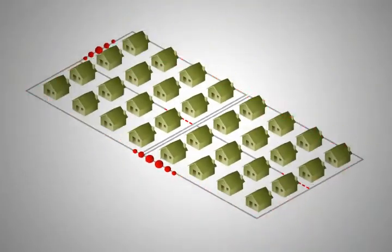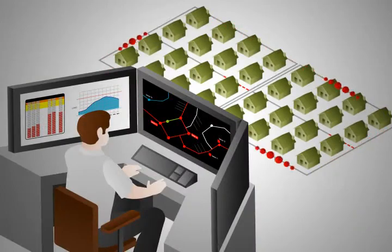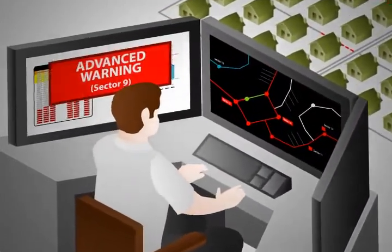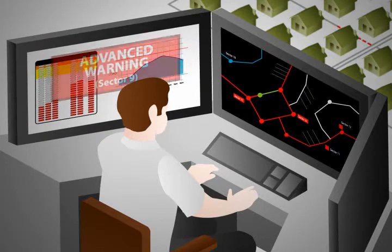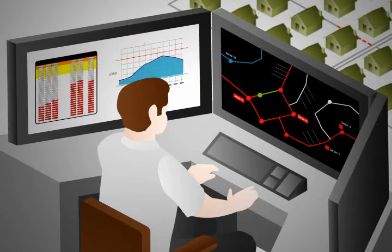Here is a scenario where we can work together with the smarter grid. An operator is warned in advance that if energy usage is not lowered on certain sections of the grid, system equipment could be damaged and an outage is probable.